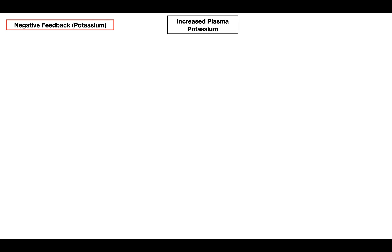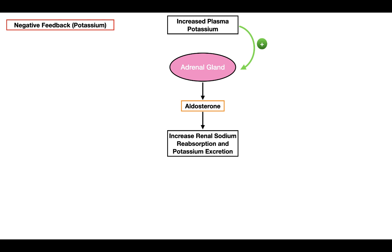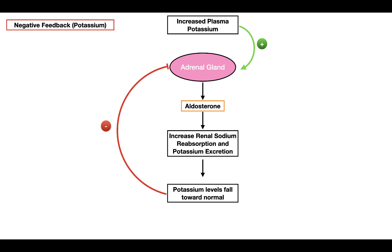The last negative feedback cycle is for potassium. When we have increased plasma potassium, this stimulates the adrenal gland to produce and secrete aldosterone. Aldosterone increases renal sodium reabsorption and potassium excretion, causing potassium levels to fall toward the normal range. When this happens, it inhibits the adrenal gland from releasing aldosterone. This is the second negative feedback cycle regulating aldosterone release.